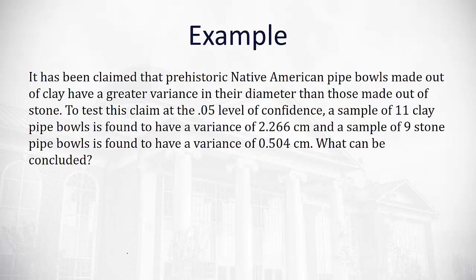Let's take a look at this example. It has been claimed that prehistoric Native American pipe bowls made out of clay have a greater variance in their diameter than those made out of stone. To test this claim at the 0.05 level of confidence, a sample of 11 clay pipe bowls is found to have a variance of 2.266 centimeters, while a sample of 9 stone pipe bowls is found to have a variance of 0.504 centimeters. Can we conclude that this claim is true?